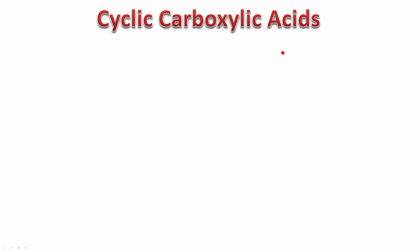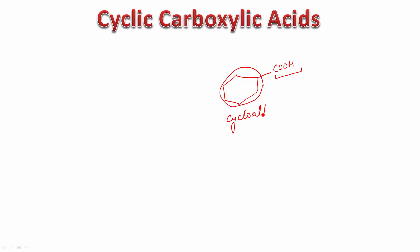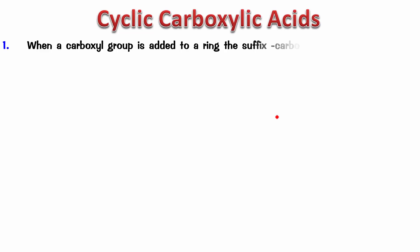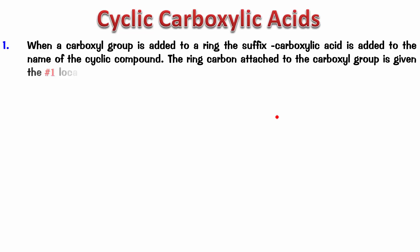The simplest carboxylic acid in a cyclic system is a ring having a COOH directly attached. Remember, the COOH can never form part of the ring — it has to be outside the ring, either directly attached or attached via some carbon atoms. If it is directly attached to the ring, the suffix 'carboxylic acid' is added to the name of the cyclic compound, giving the form 'cycloalkanecarboxylic acid' with no space.